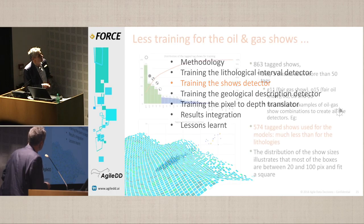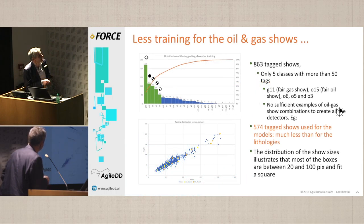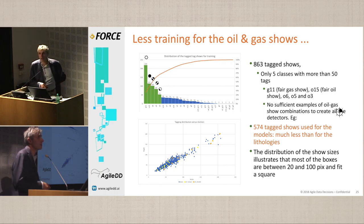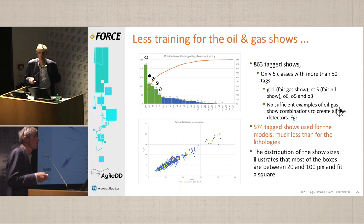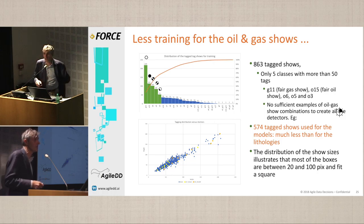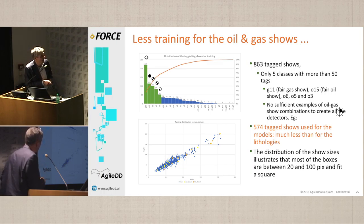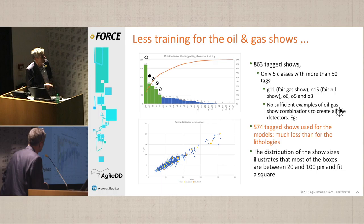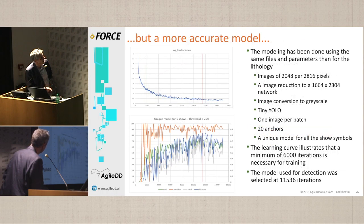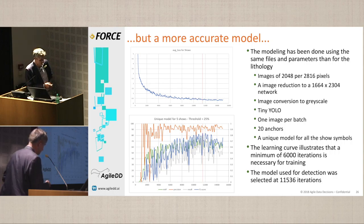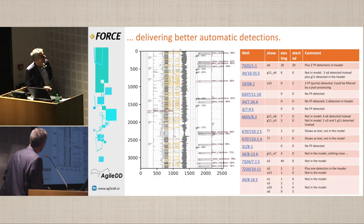For the shows, we had fewer labels, but the results were better because there is less variety for shows compared to lithological intervals. All the shows are circles, which helps, as there is less variety to handle. The precision and recall were better, around 10,000 epochs of training. You can see here some detections of shows.